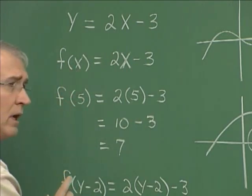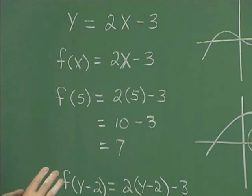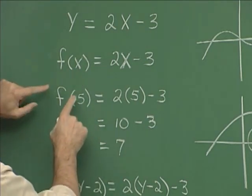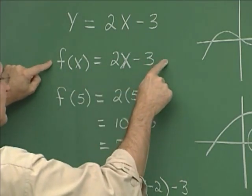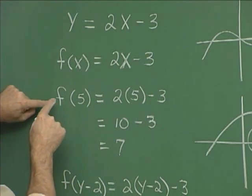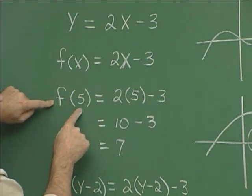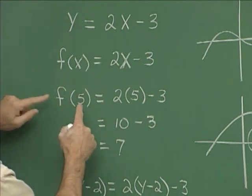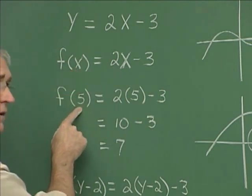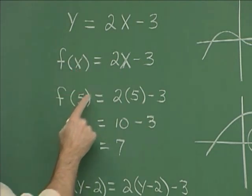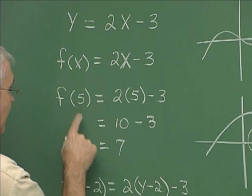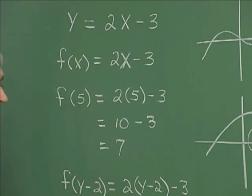That's very important because I can almost guarantee you that on the test there's going to be a function that's given, and then you'll be asked to evaluate f of something. All you do is replace this something in place of the variable x. So replace x with 5 and evaluate — we find that f of 5 is 7.